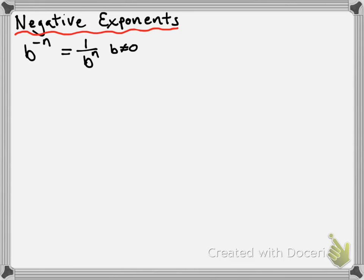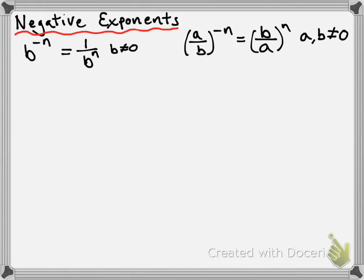The second negative exponent law is actually the same idea, just stated a little differently. If we have a fraction being put to a negative exponent — a over b to the power of negative n — you can evaluate that by taking the reciprocal and putting it to a positive exponent. So a over b to the power of negative n equals b over a to the power of positive n. We need to make sure we're not dividing by 0, so on the left side b cannot be 0, and on the right side a cannot be 0 — meaning a and b both cannot equal 0.